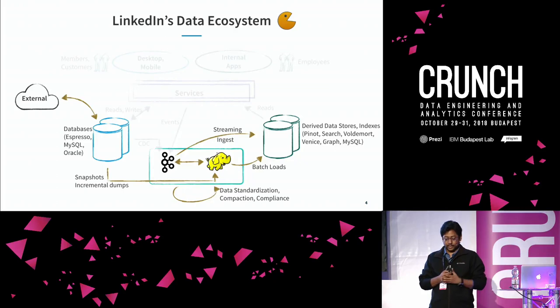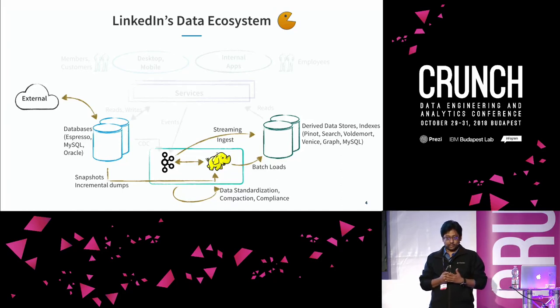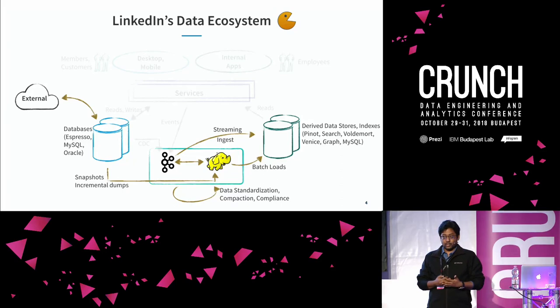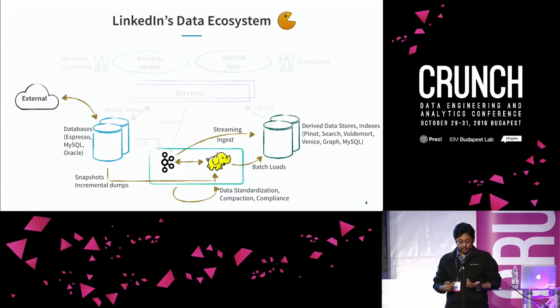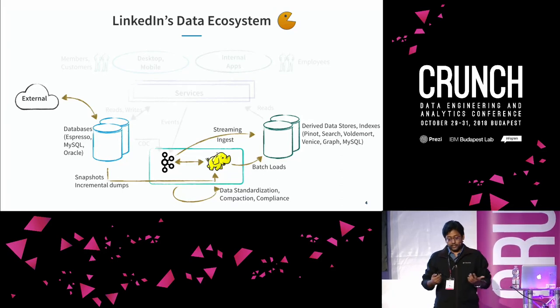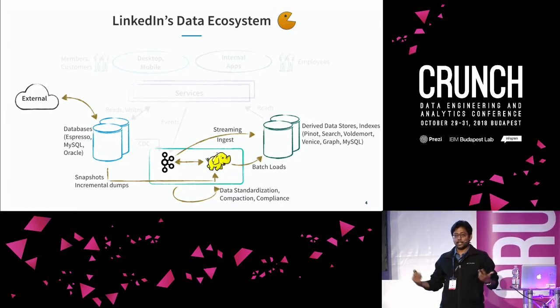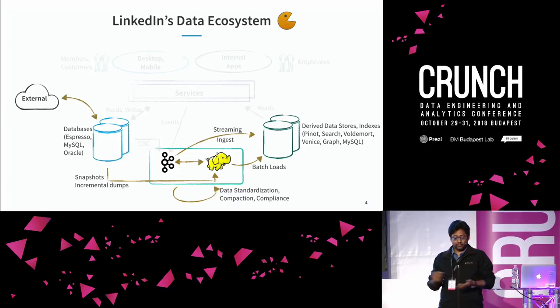Looking at where Goblin comes into the picture: it powers getting data from external sources onto the databases, CDCs brought onto Kafka, events generated over Kafka brought to Hadoop, snapshots, incremental dumps, data standards compliance, compaction, and data movement in stream or batch format to the derived data stores. Goblin is doing not just ETL but a whole data management suite for streaming and batch data, including interaction with external data sources where Hadoop doesn't make sense.